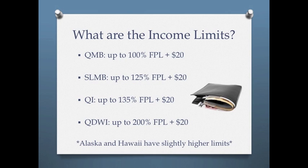For an individual to qualify for QMB in 2015, the limit was $1,001. The income limits for married couples are higher — the 2015 income limit for QMB was $1,348. These limits may increase in 2016. The limit for SLMB is 125% of the poverty level plus $20, the limit for QI is 135%, and the QDWI limit is 200%. Alaska and Hawaii have slightly higher limits. This video's description includes a link to the Social Security Administration's website, which lists all of the income limits.